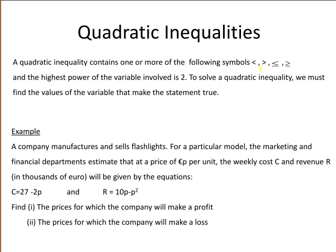A quadratic inequality contains one or more of the following symbols: less than, greater than, less than or equal to, or greater than or equal to, and the highest power of the variable involved is 2.